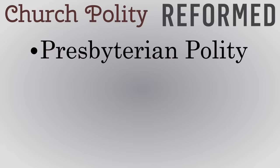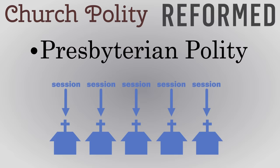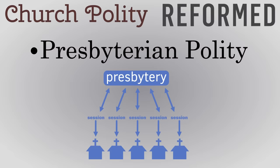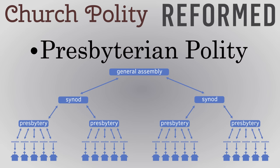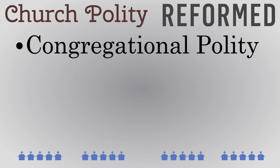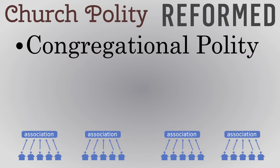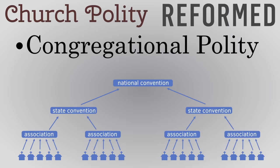Another difference between these denominations is what is called church polity — the way that churches are governed and connected together. Reformed churches have a Presbyterian polity: local congregations have teaching elders and ruling elders, which together make a board called the church's session. Churches send delegates to a higher church court, perhaps called a Presbytery or Classis. These groups may be organized into synods, and then into the General Assembly, though exact structure and naming varies. Some Reformed churches, like Reformed Baptists and Congregationalists, have a Congregational polity, where every church is independent and does not report to a higher body. They may meet in an association or convention, but authority is only from the bottom up, with no control over local congregations.